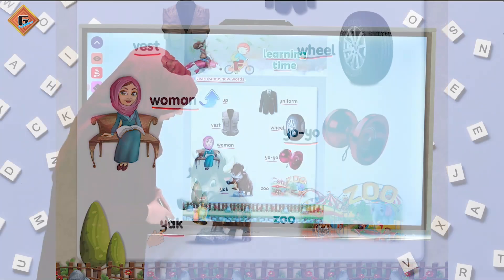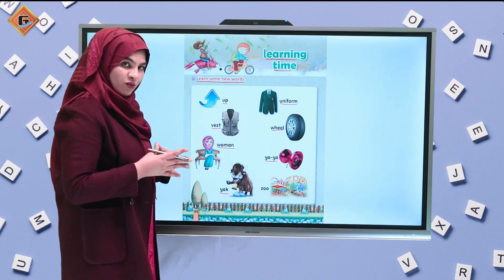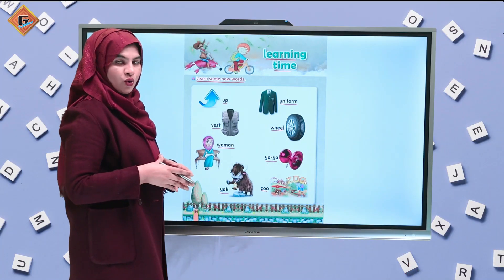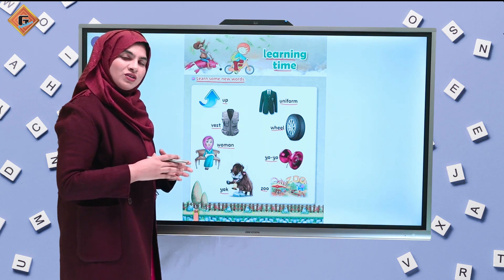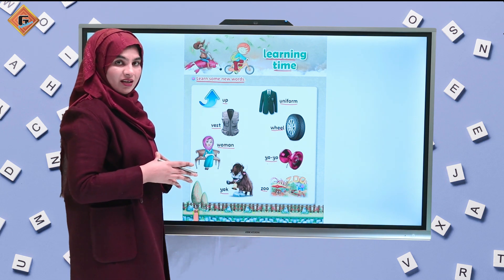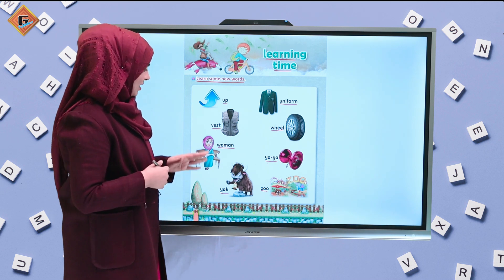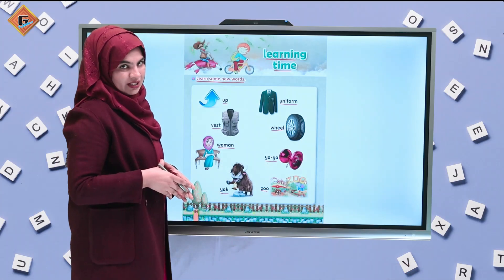What is this? It's an animal — a very scary and wild animal, normally found in the mountains. It's a yak. Now let's see — zoo. In the zoo we visit many animals — wild animals which we normally can't keep in our homes. Now let's revise them quickly: up, uniform, vest, wheel, woman, yo-yo, yak, and zoo.